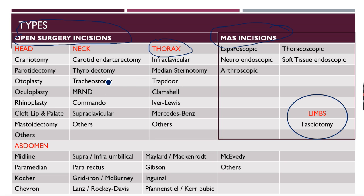I have divided all the incisions and listed them depending on the site. There is some overlap but most are correctly listed. For the abdomen: midline, paramedian, Kocher, chevron, supra- and infra-umbilical, pararectus, gridiron or McBurney's, Lanz or Rocky Davis, Maylard and Mackenrodt, Gibson, various inguinal incisions, Pfannenstiel, Kerby-Vic, McEvedy, and others. Most of these will be discussed one by one in subsequent videos.